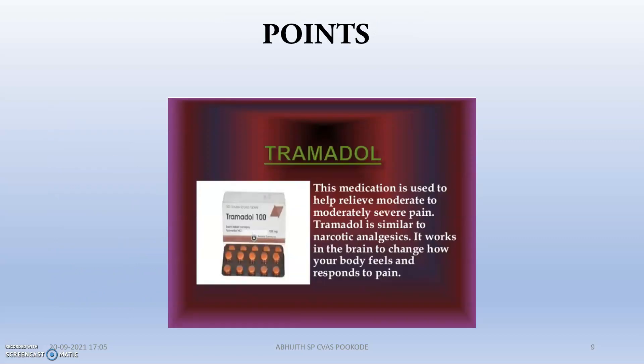Important points: this medication is used to help relieve moderate to moderately severe pain. Tramadol is similar to narcotic analgesics since it is an opioid. It works in the brain to change how your body feels and responds to pain. Our body feels pain through a separate mechanism of nociception, and this chemical component acts on certain nerve receptors, completely blocking those pain message transmissions so that pain is not sensed by the patient.